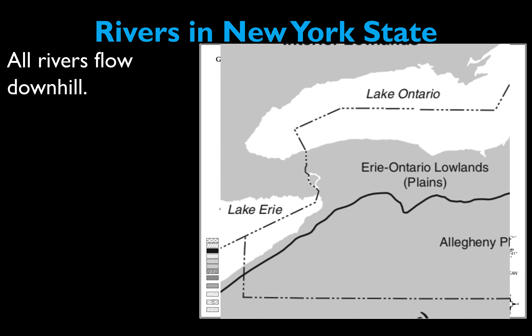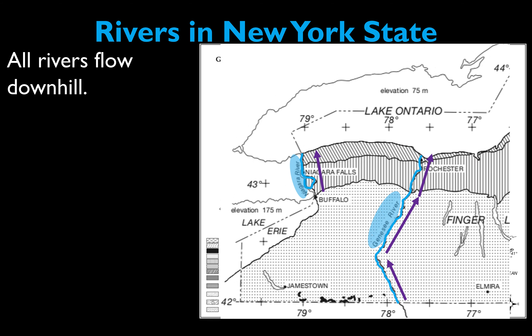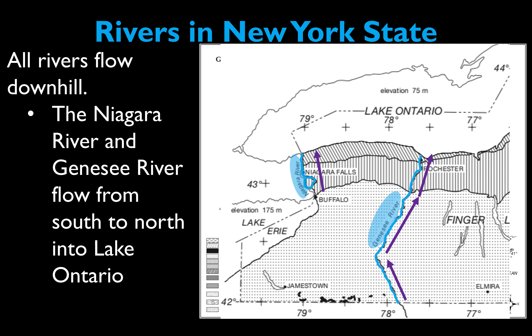To prove that, you can look at the landscape regions on page two of the reference table. The Genesee River specifically starts in the Allegheny Plateau and flows northward through the Erie-Ontario Lowlands into Lake Ontario. The plateau is a high elevation and the lowlands are a low elevation. That's how I know it's flowing in that direction — it goes from high elevation towards low elevation. So both of these rivers flow from south to north into Lake Ontario, and you can verify that by looking at the landscape regions and their respective elevations.